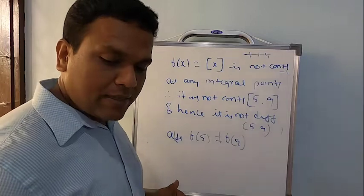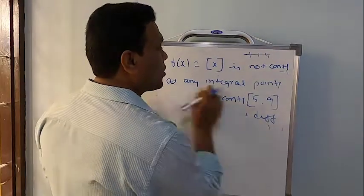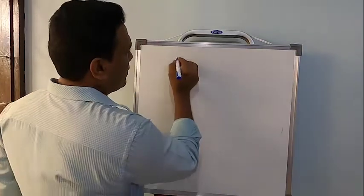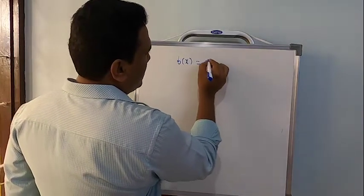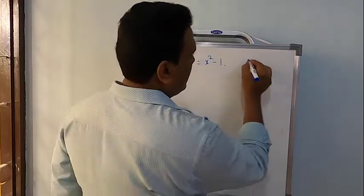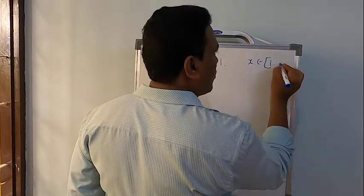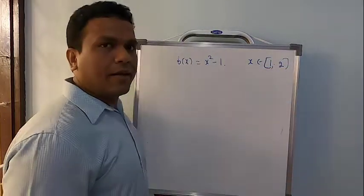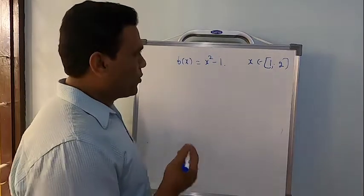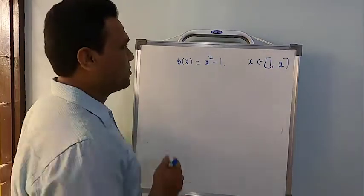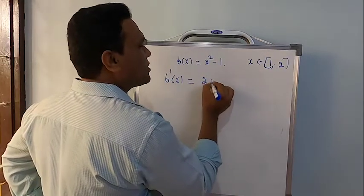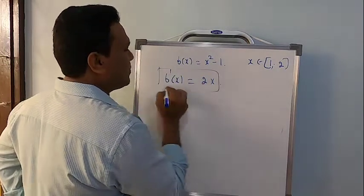In this, the first and second problems are the same. But what is the third problem? The third problem is f(x) = x² − 1, in the interval x belongs to [1, 2]. So let me work this out. f dash of x will be 2x — we will use this later.